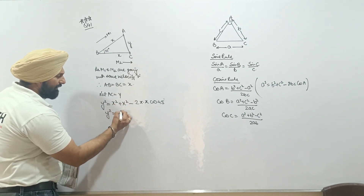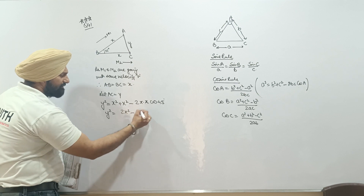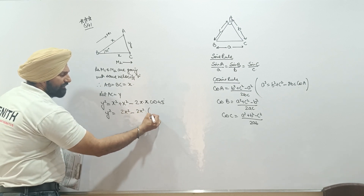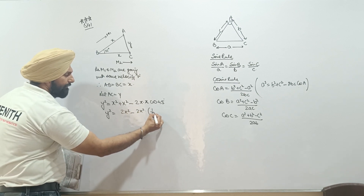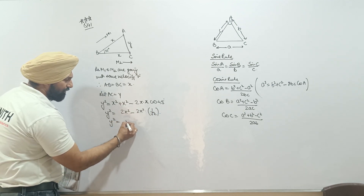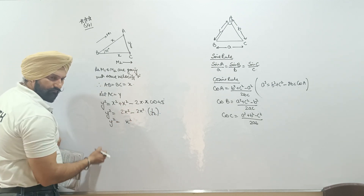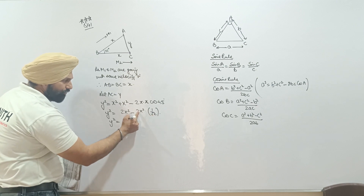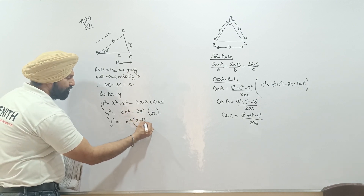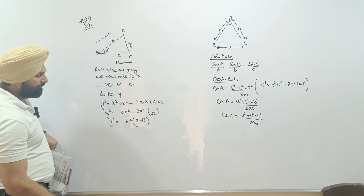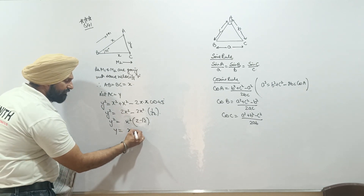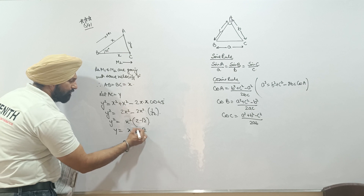So y squared equals 2x squared minus 2x squared times cos 45. Since cos 45 equals 1 over root 2, we get y squared equals x squared times (2 minus root 2). Therefore y equals x times the square root of (2 minus root 2).